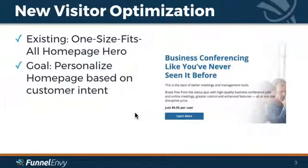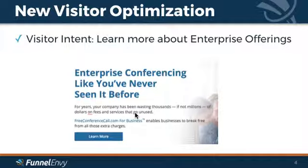Some suggestions start with personalizing the homepage based on customer intent. As you can see right here, it's generalized and doesn't speak to any individual customer. But what you could do is find customers that are enterprise-level accounts and personalize that CTA and hero text to really speak to them. With that, you're going to increase conversions and ultimately drive more down-funnel revenue with our predictive platform.